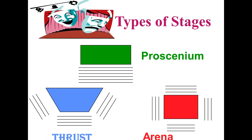So in each of these three little diagrams, you see straight lines here, here, here, here, here, and here, and those lines refer to the area where the audience will sit.